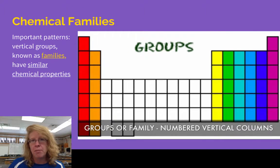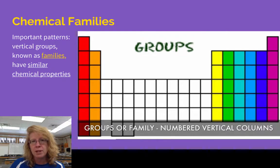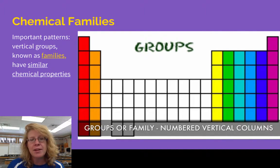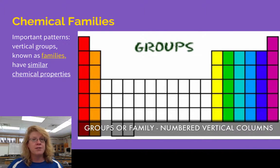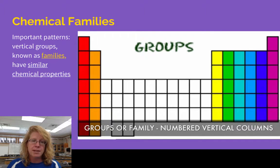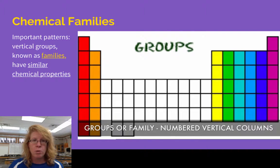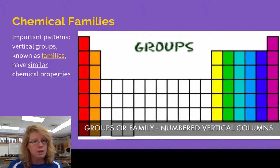A key piece about how the periodic table is organized is that vertical groups are the important piece. Everything in a vertical group is what we call a chemical family. They're called families because they are somewhat alike to one another — not exactly alike, just like you and your family members aren't exactly alike. The families going up and down are more similar to each other than to anything else on the periodic table, so we're going to go through a bunch of the group names.